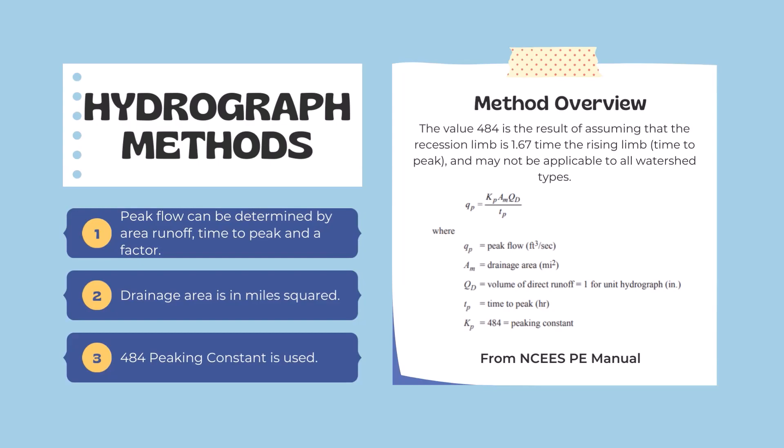The value of 484 is the result of assuming that the recession limb is 1.67 times the rising limb or the time to peak and may not be applicable to all watershed types. It can vary in different parts of the country or the world.